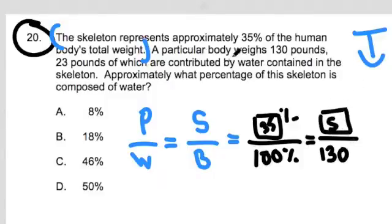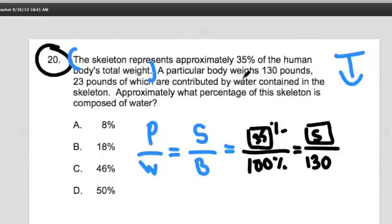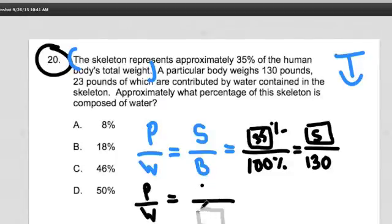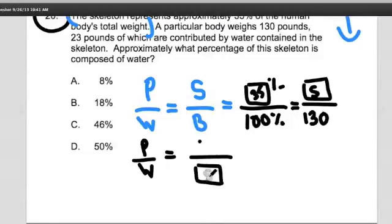We don't know what the skeleton is, we'll call that S. Then it says 23 pounds of which are contributed by water contained in the skeleton. What does that mean? Well, I think of my part to whole relationship again. They do tell you, we don't know what the skeleton is - in this case the skeleton is your whole, but they do tell you what the part is. The part is 23. If I know what the skeleton weighs, then I can compare how much of the skeleton is actually the water.